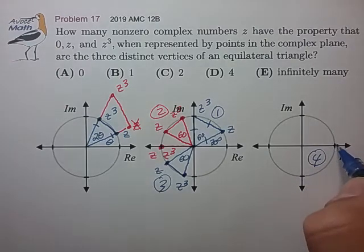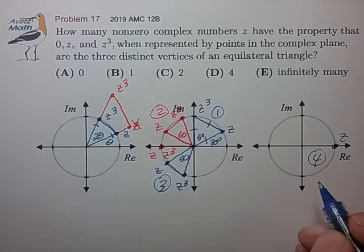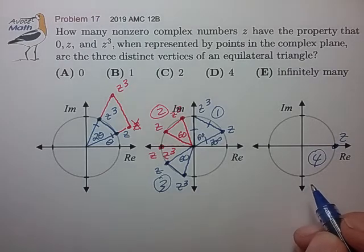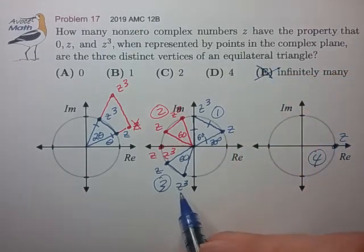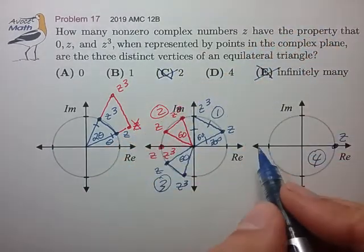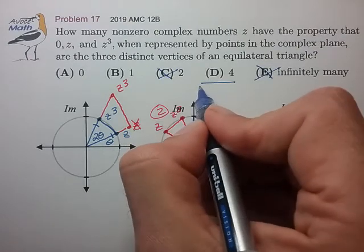But once z reaches 360 degrees, we are done finding unique and distinct values of z. So we know that the number of solutions is finite, so we can eliminate choice E. We've already determined that we have more than two choices, so our answer for this question is d4.